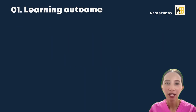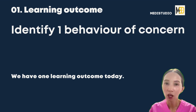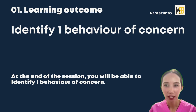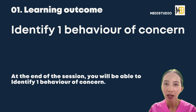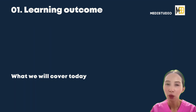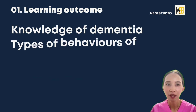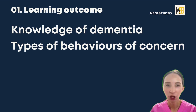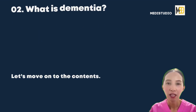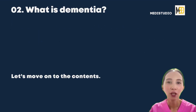Learning outcome. We have one learning outcome today. At the end of the session, you will be able to identify one behavior of concern. What we will cover today: knowledge of dementia, and types of behavior of concern. Let's move on to the contents.